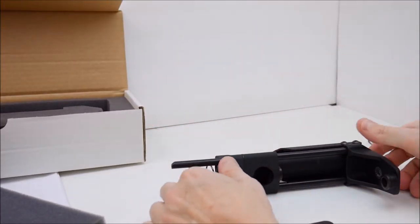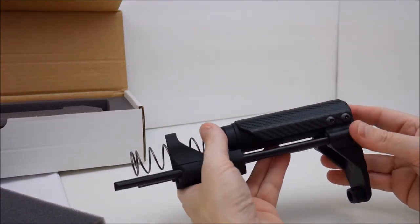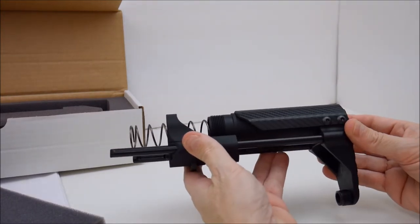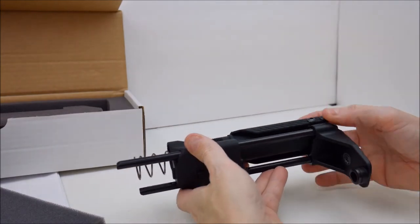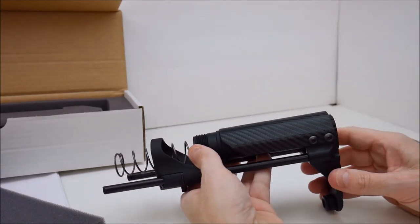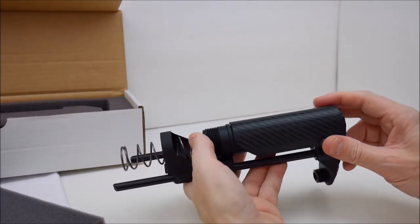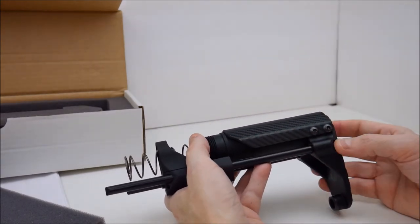So the stock system is extremely compact. The cheek rest, which this one appears to be a carbon fiber or maybe it's a plastic with the carbon fiber finish on it, looks really nice. You've got two bolts on either side that you can remove and you can remove this piece and replace it with something different.